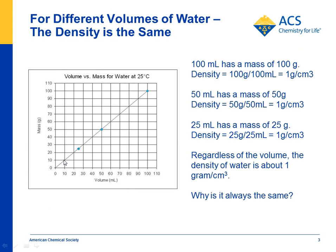We have students make a graph to show that it's a nice straight line. If you have the volume on the x-axis and the mass on the y, you see that 25 milliliters of water has a mass of 25 grams. If you do the math, you end up with 1 gram per cubic centimeter.